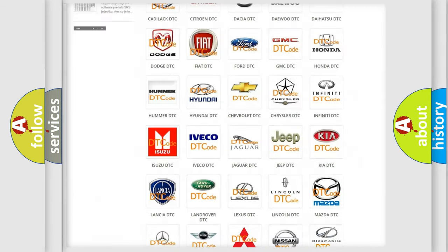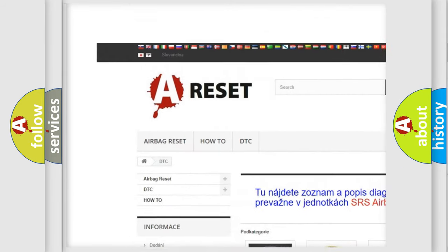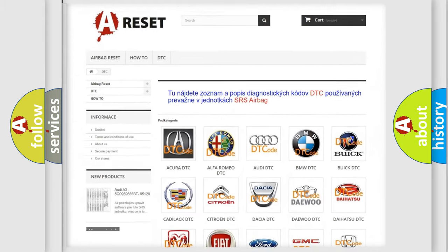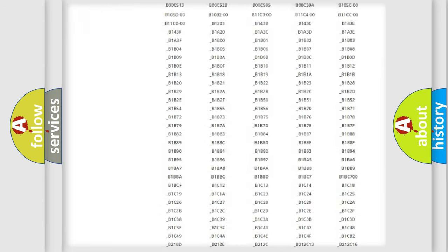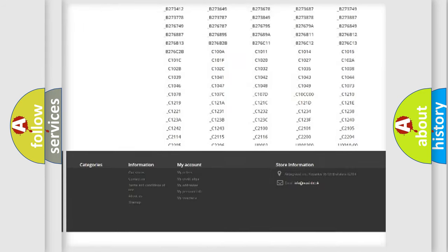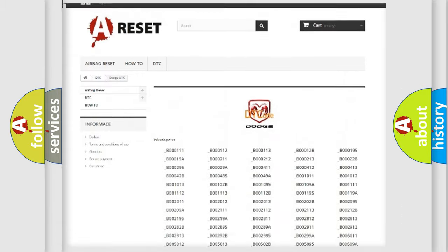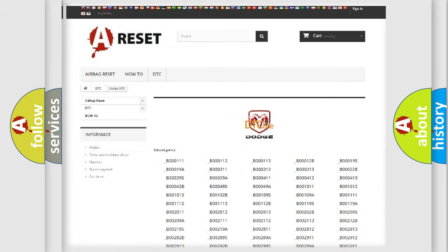Our website airbagreset.sk produces useful videos for you. You do not have to go through the OBD2 protocol anymore to know how to troubleshoot any car breakdown. You will find all the diagnostic codes that can be diagnosed in Dodge vehicles, and many other useful things.